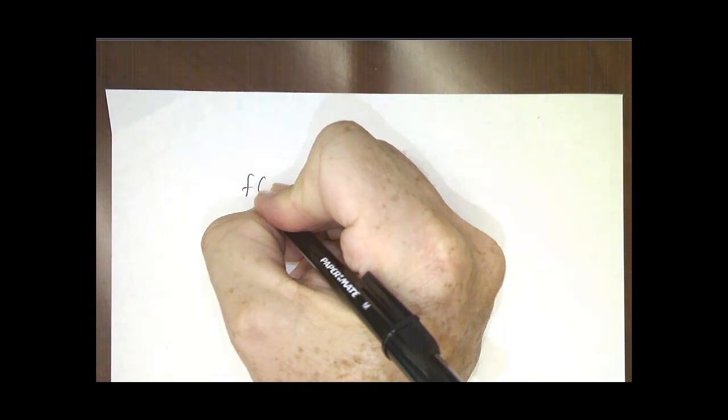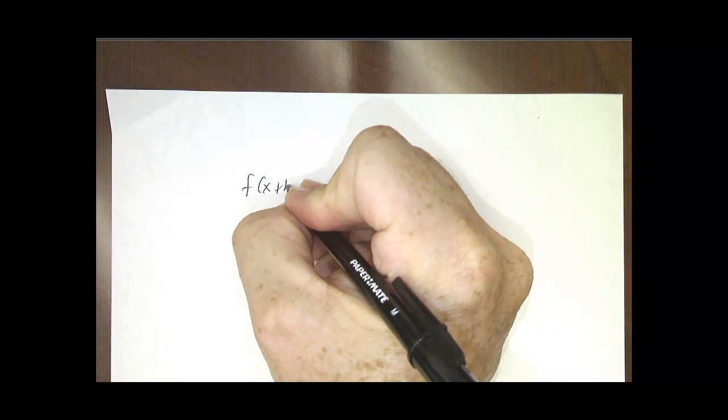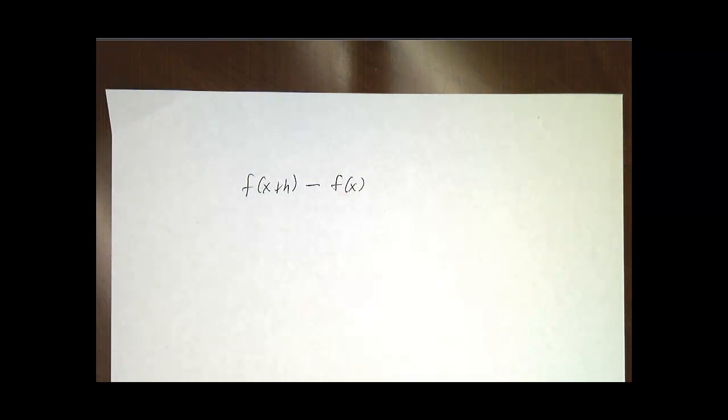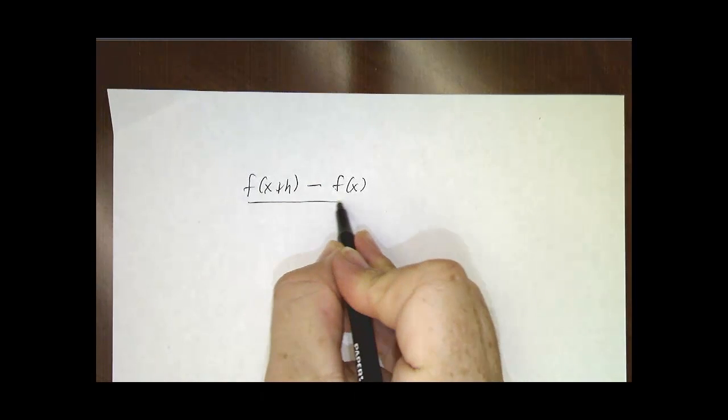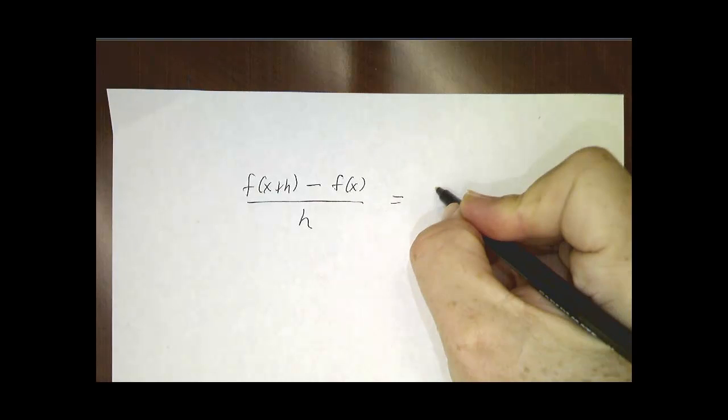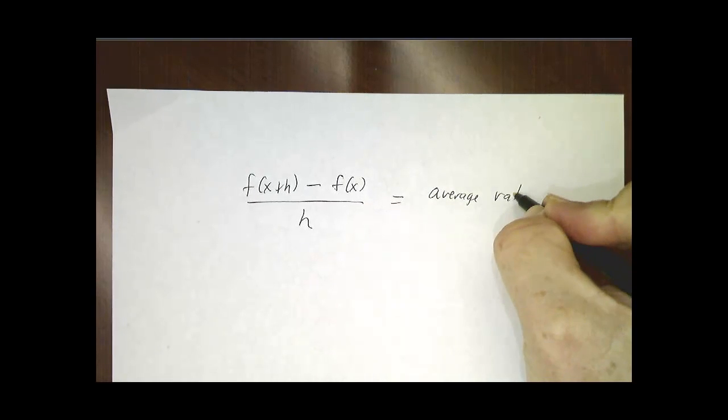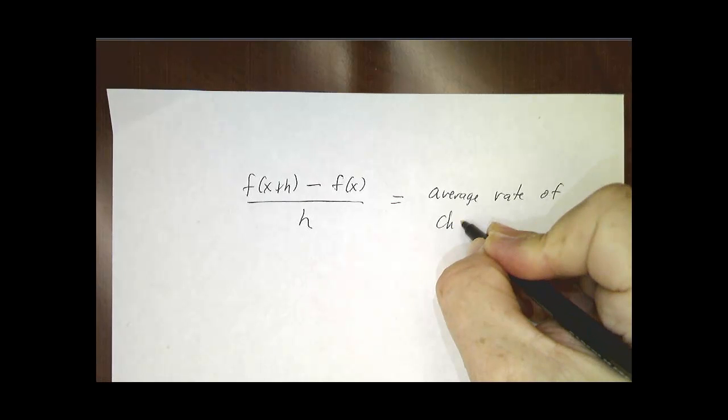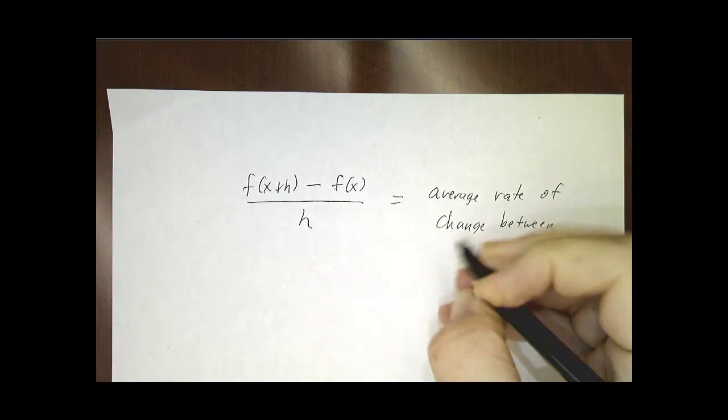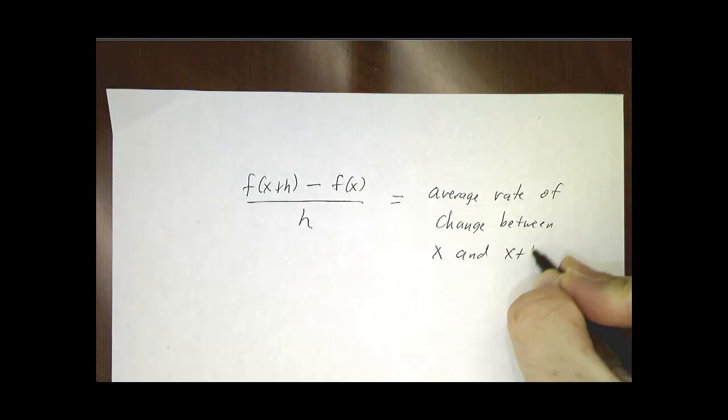In general, the way we do this in calculus is we've got a function. We say, let's take the function a second from now, or a minute from now, or in general, a time h from now, and divide it by h. This is the average rate of change between x and x plus h.